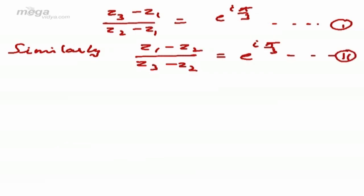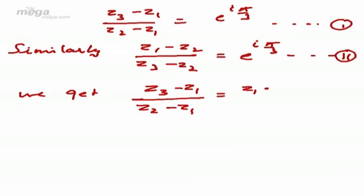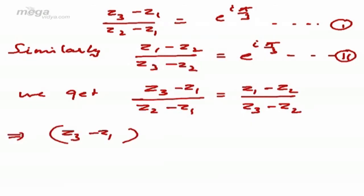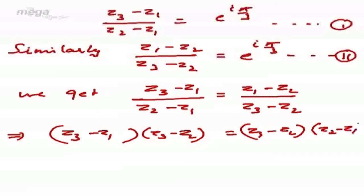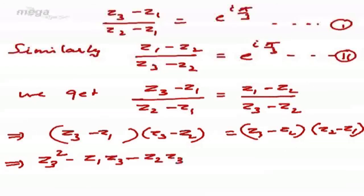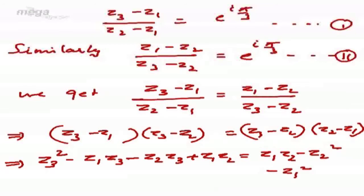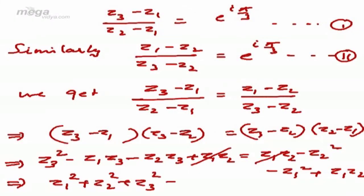Equating equation 1 and equation 2, we get (Z3 - Z1)/(Z2 - Z1) = (Z1 - Z2)/(Z3 - Z2). Cross-multiplying: (Z3 - Z1)(Z3 - Z2) = (Z1 - Z2)(Z2 - Z1). Expanding: Z3² - Z1Z3 - Z2Z3 + Z1Z2 equals the right side. After simplification, Z1Z2 cancels out, and we arrive at Z1² + Z2² + Z3² = Z1Z2 + Z2Z3 + Z3Z1.